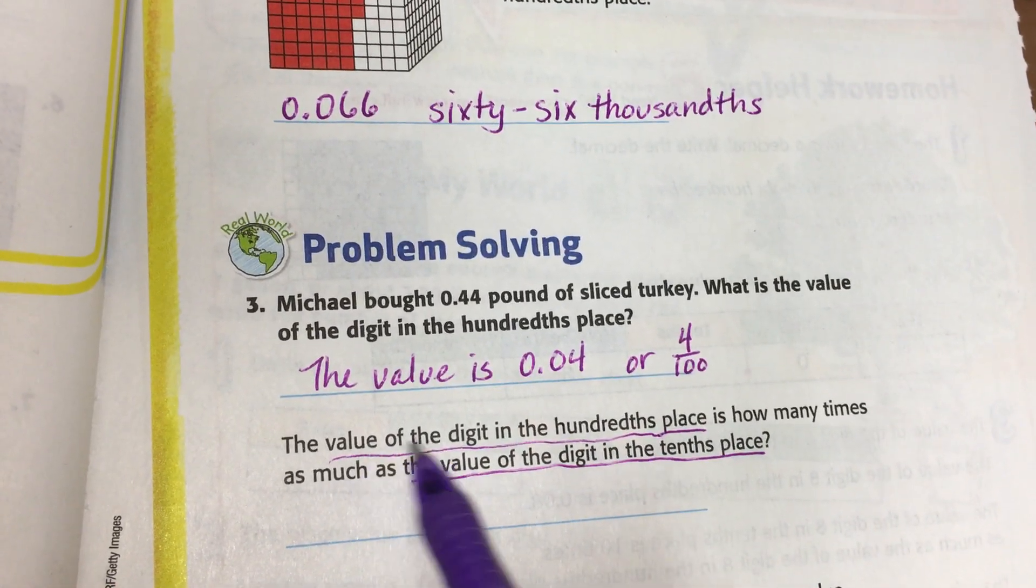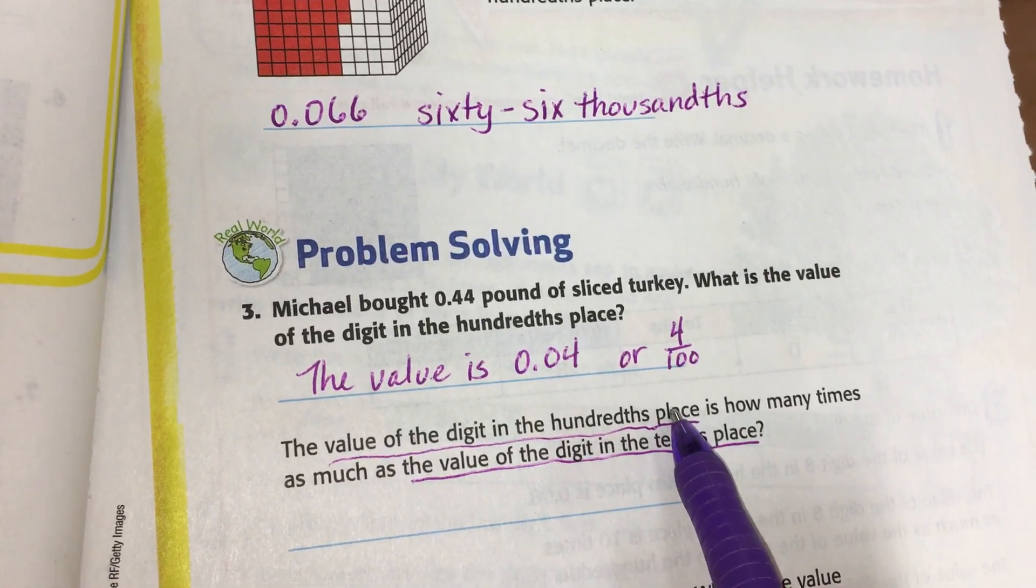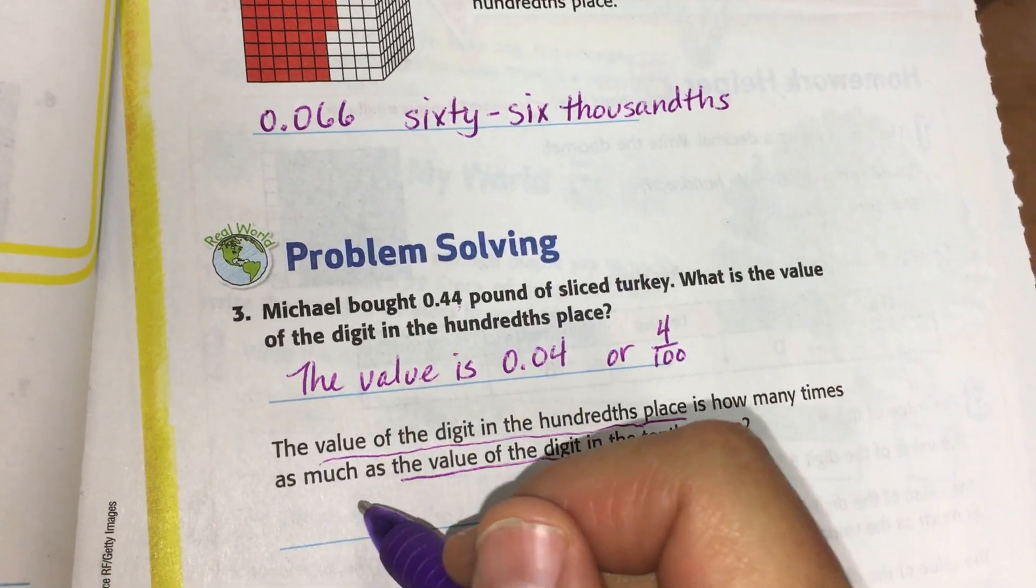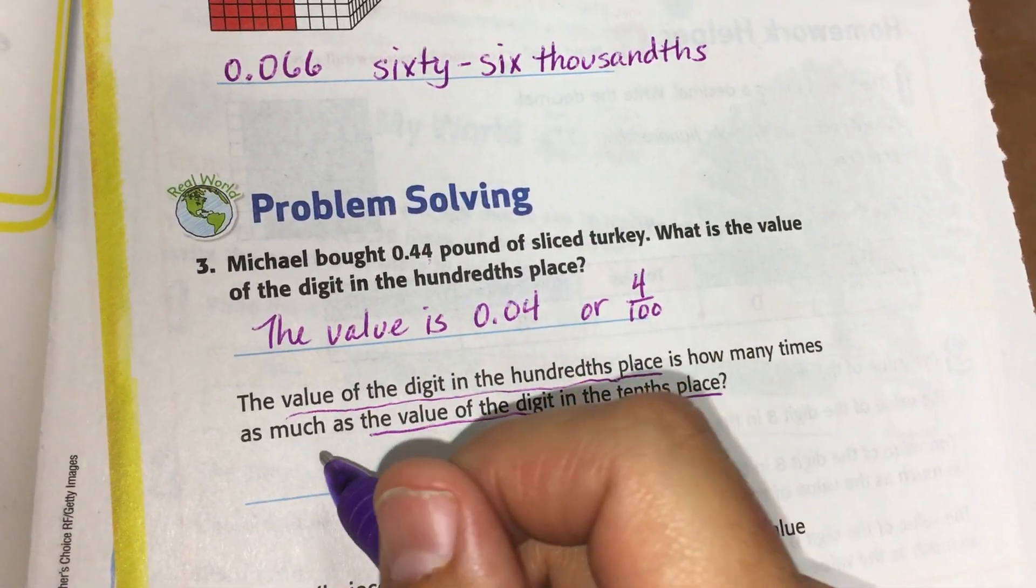So the value of the digit in the hundredths place, which is right there. We're going to go ahead and put that in our answer. So it's four hundredths.